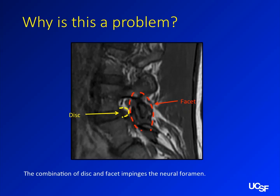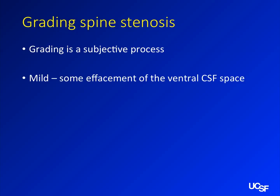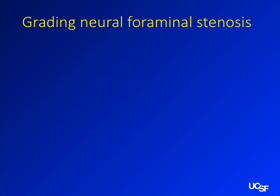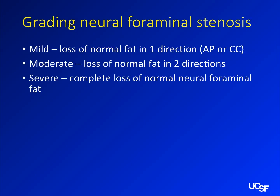Grading — it's like your English teacher grading an essay; it's super subjective. Usually people do three grades: mild, moderate, or severe. For the spine, it's usually based on how much CSF is left. If you only have a little bit of narrowing, call it mild; if you have none left, call it severe. If there's abnormal cord signal, that's the most worrisome thing. Neuroforaminal stenosis is graded similarly — if you lose the fat in one direction, call it mild; two directions, moderate; and if you can only see soft tissue in the neural foramen, call it severe.